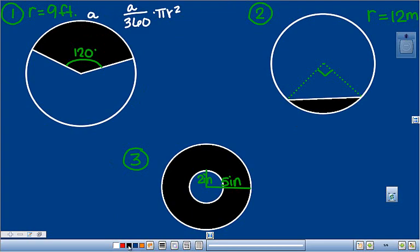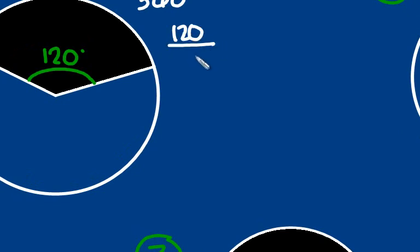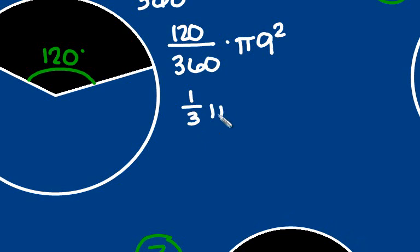So my formula here was A over 360 times pi r squared. So for this sector, I'm going to take 120 over 360 times pi. My r is 9, and I need to have it squared. So 120 over 360, that'll actually reduce. So 120 goes into 360 three times, so this is one third pi. 9 squared is 81.